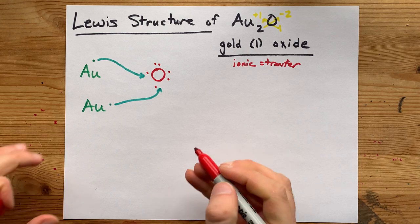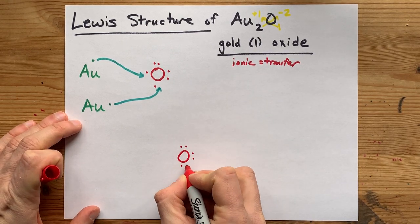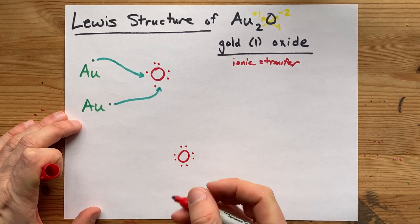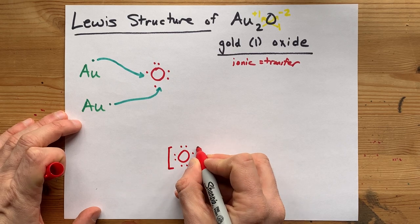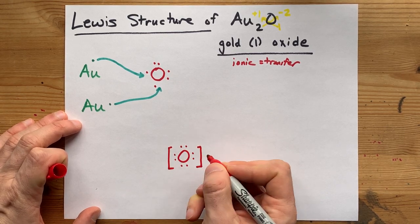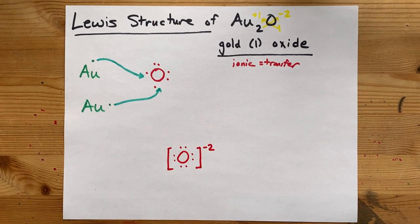The complete Lewis structure here has oxygen with its one, two, three, four, five, six, seven, eight electrons. See the extra two electrons there that came from the gold, completing the octet on oxygen? Eight electrons total, and two extra electrons give it a charge of -2.